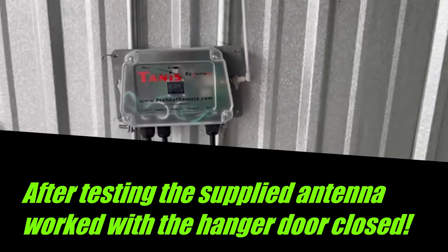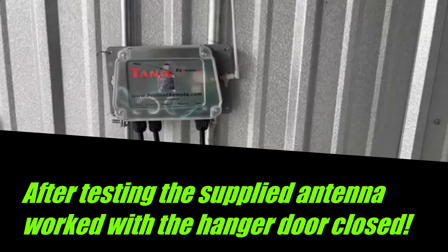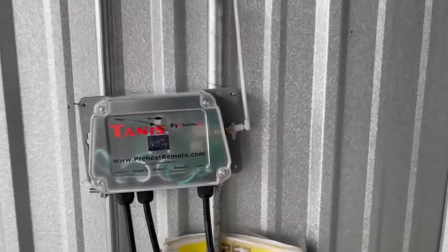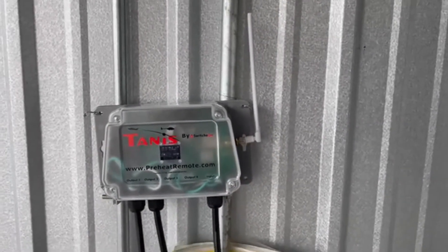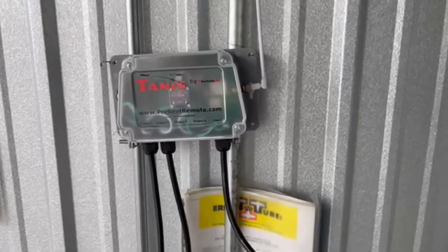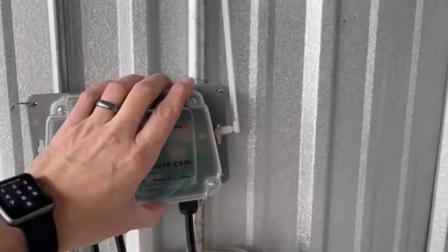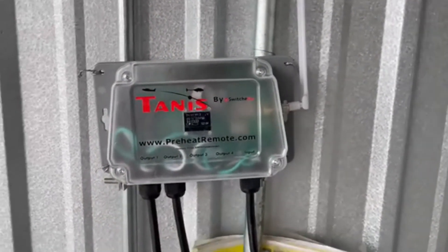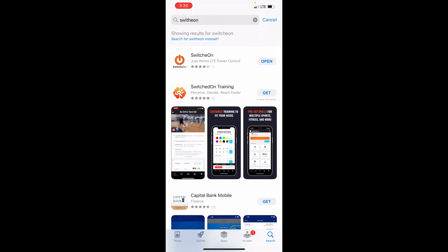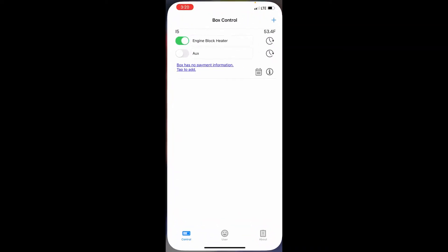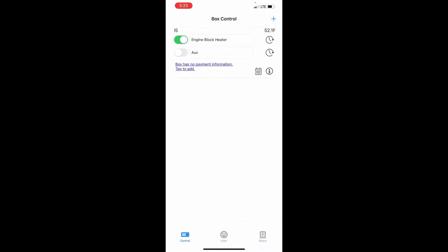They do sell a secondary antenna you could then run outside so that if you're not getting signal, you can still get this system to work. So that's the unit itself. Next, we'll jump over to the app and I'll show you how the app looks.